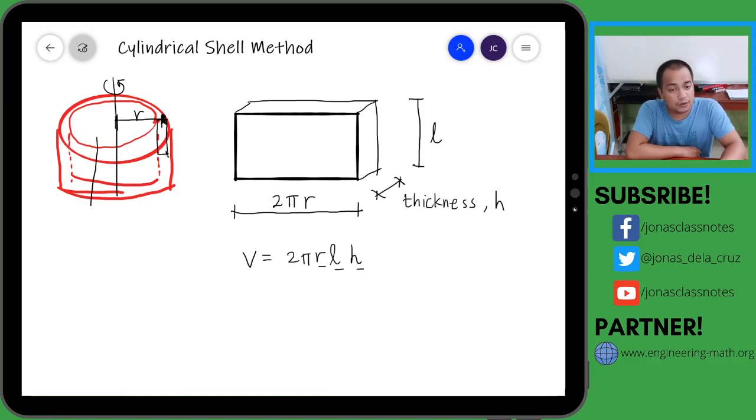Kung vertical yung ating rectangular element, ang ating thickness ay dx. Diba? So kapag kinuha natin yung differential volume, the differential volume is 2π.